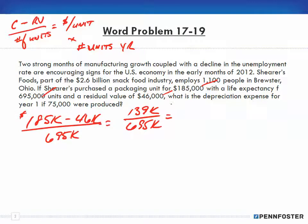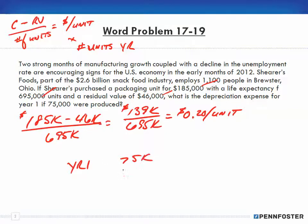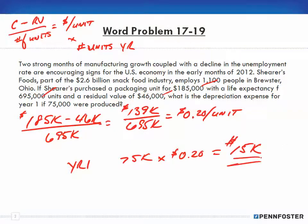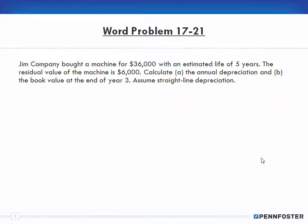In the numerator we have dollars, in the denominator we have units, which gives us a dollar-per-unit rate. So $139,000 divided by 695,000 gives us $0.20 per unit. If we have 20 cents per unit and year one had 75,000 units produced, we multiply: 75,000 × $0.20 gives us a depreciation amount of $15,000. Simple as that.